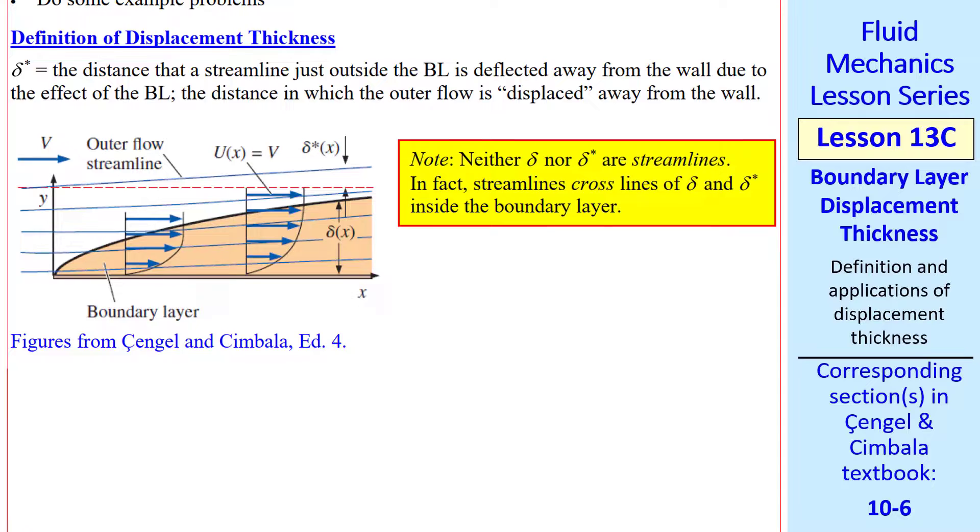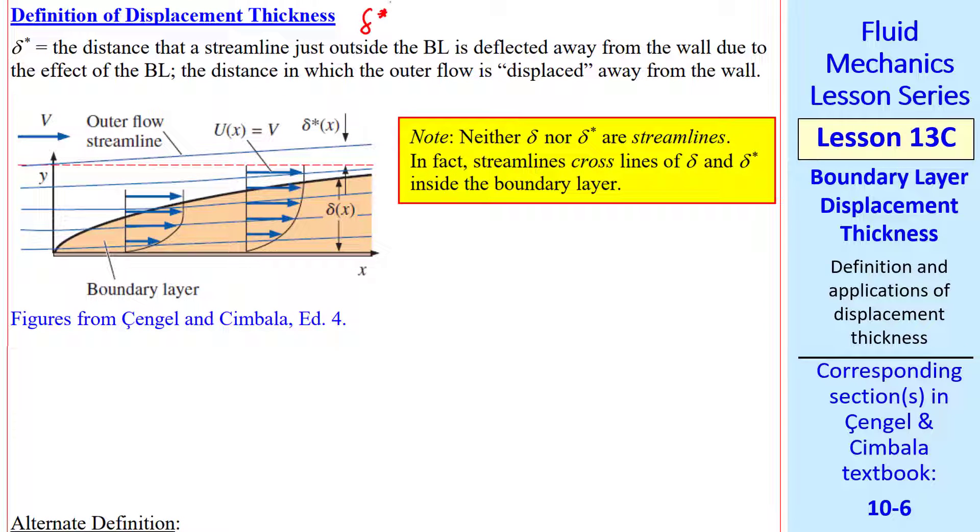First, a definition of displacement thickness. We use the symbol delta star to indicate displacement thickness. Delta star is defined as the distance that a streamline just outside the boundary layer is deflected away from the wall or normal to the wall because of the boundary layer.